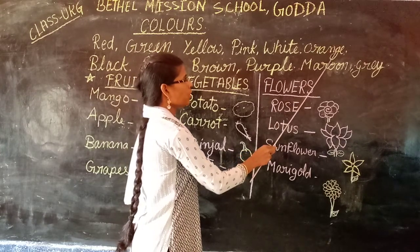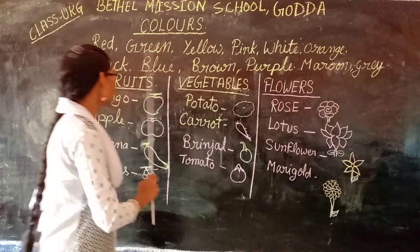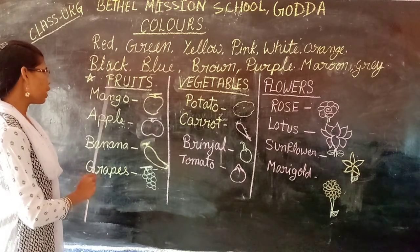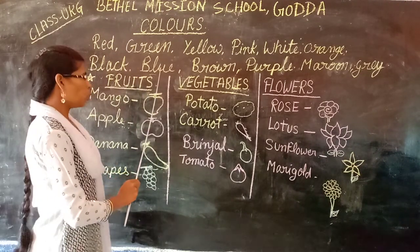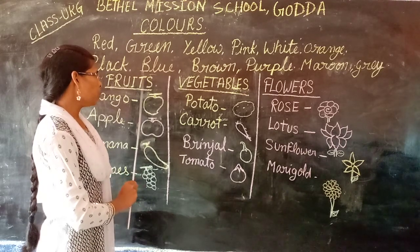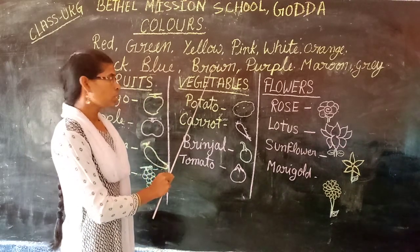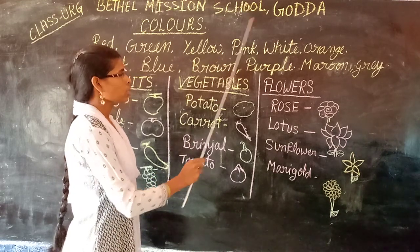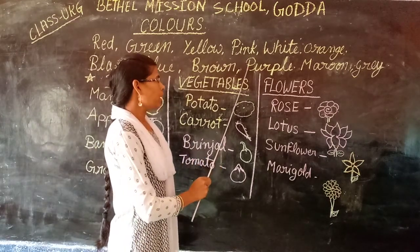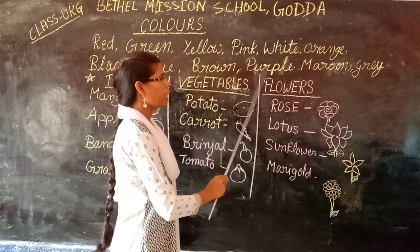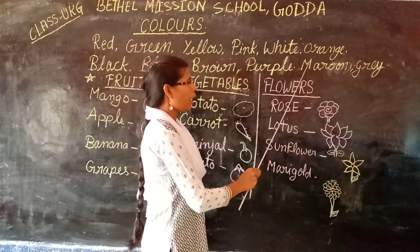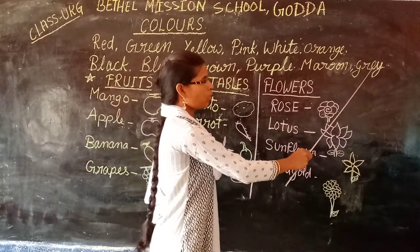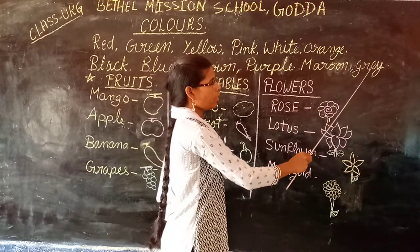Now I will read and learn the spellings. Orange: O-R-A-N-G-E. Orange. Black: B-L-A-C-K. Black. Blue: B-L-U-E. Blue. Brown: B-R-O-W-N. Brown. Purple: P-U-R-P-L-E. Purple. Maroon: M-A-R-O-N. Maroon. Gray: G-R-E-Y. Gray.